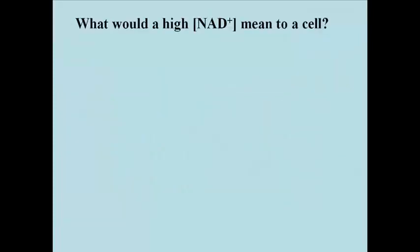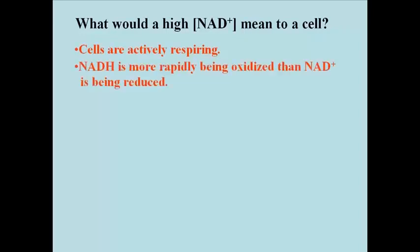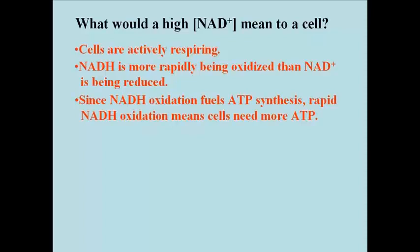Before I describe the unusual allosteric regulation of glyceraldehyde 3-phosphate dehydrogenase, let's consider this question: what would a high concentration of NAD+ mean to a cell? First, it means that cells are actively respiring — the cell is rapidly oxidizing NADH, which is what's keeping NAD+ levels relatively high. NADH oxidation fuels ATP synthesis, which happens in electron transport and oxidative phosphorylation. So high NAD+ levels must mean that the cell is actually calling for more ATP to be synthesized.